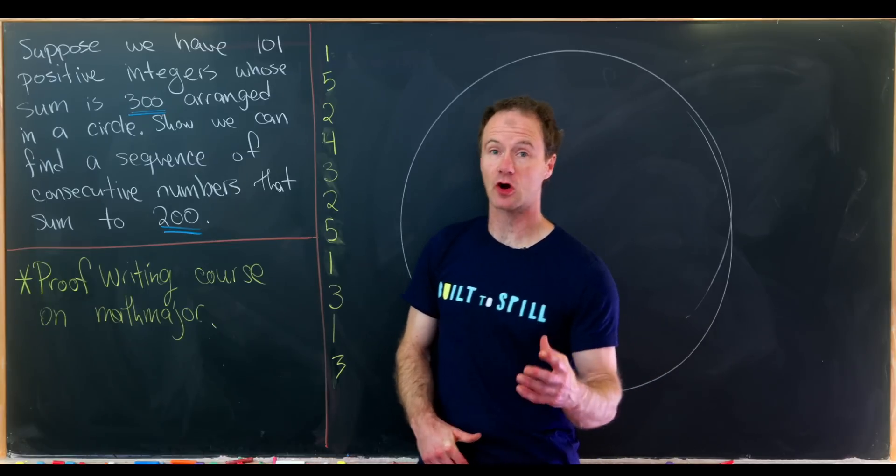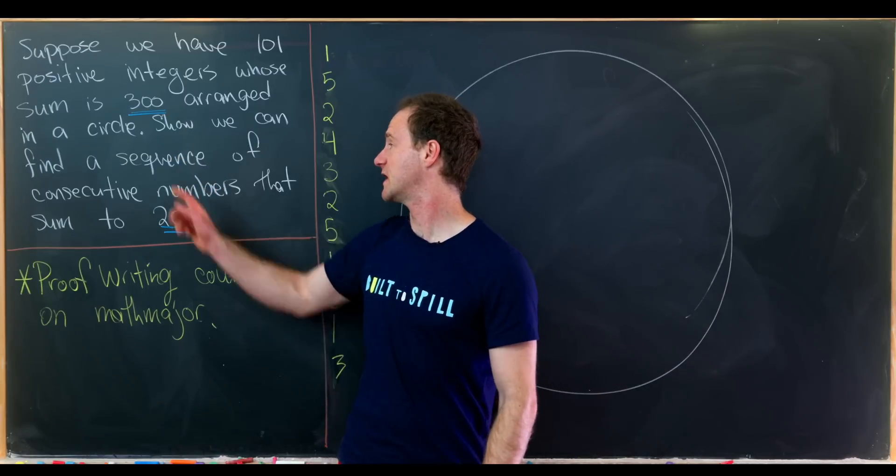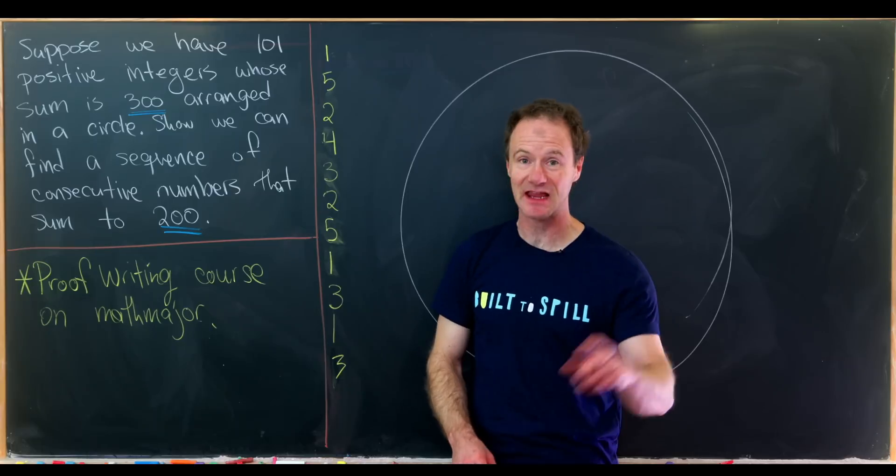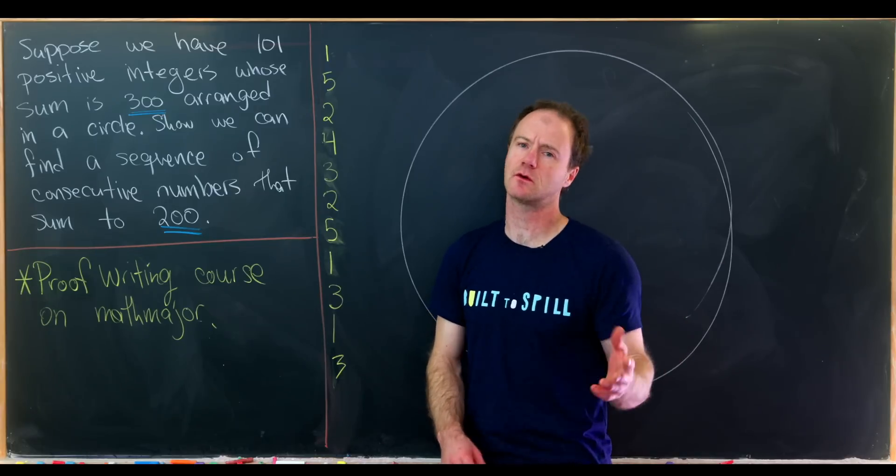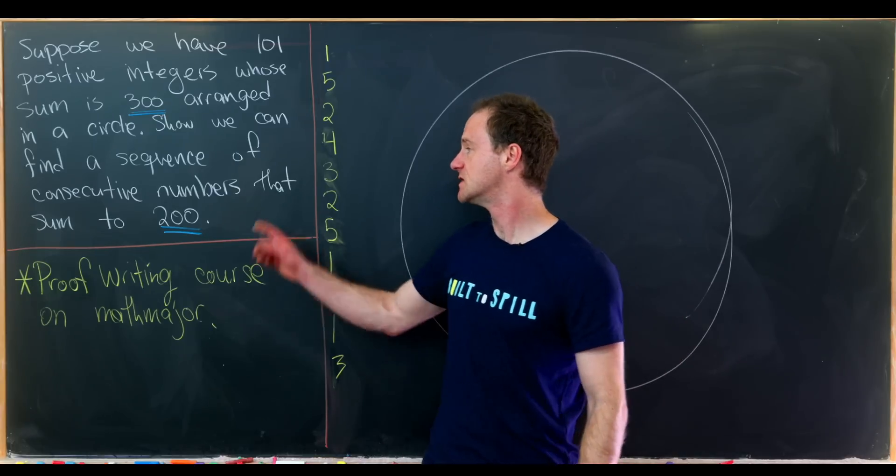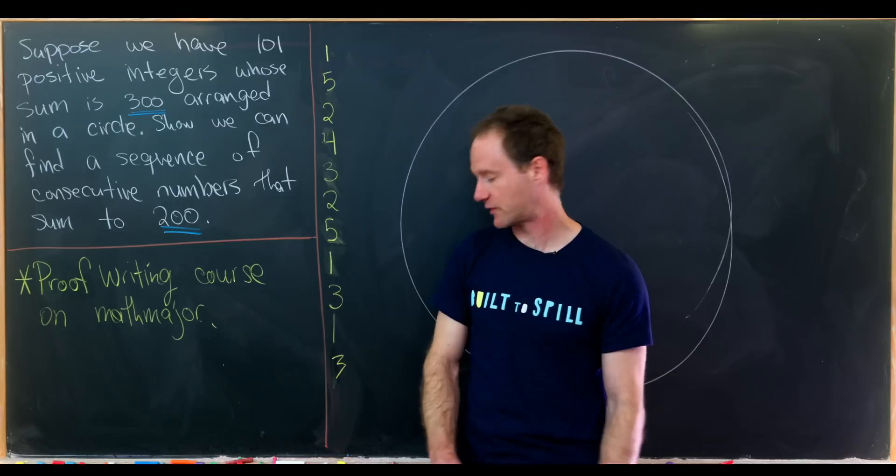circle. Then our goal is to show that we can find a sequence of consecutive numbers around this circle or along this circle such that they sum to 200.